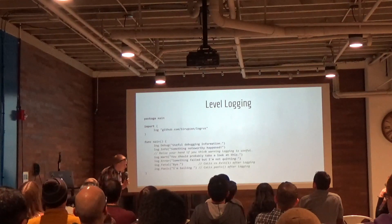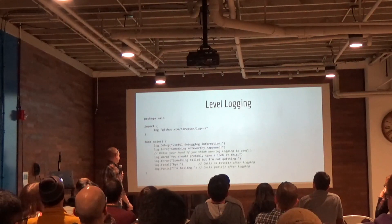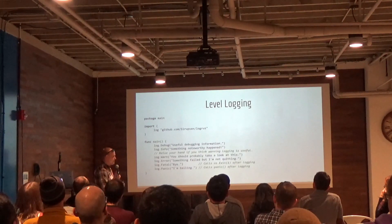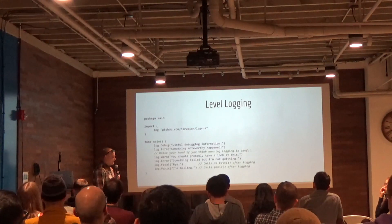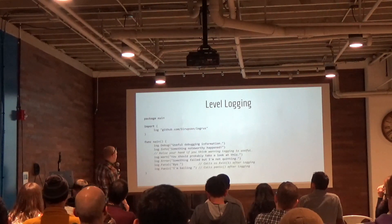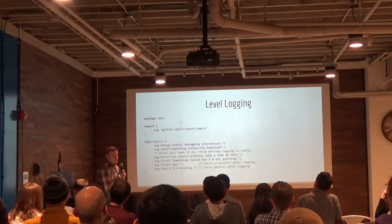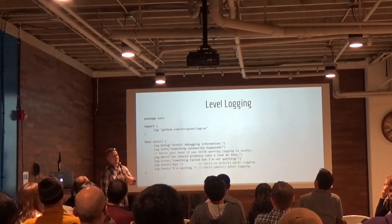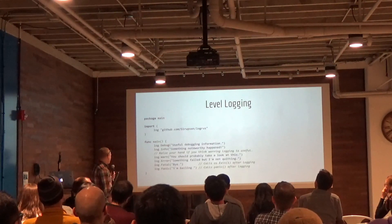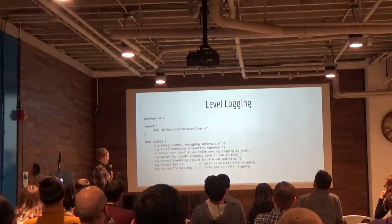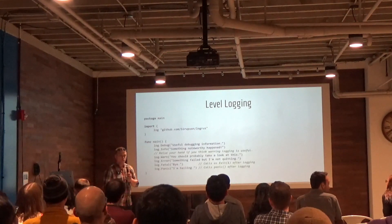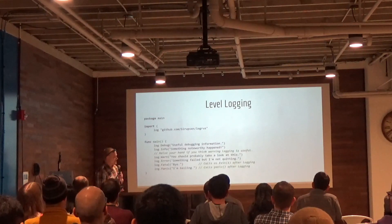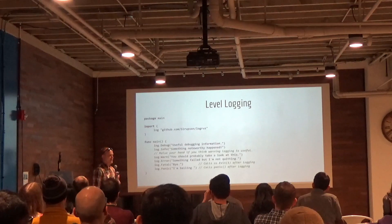One of the cool features is level logging, so for you Java people it'll be great. There was some discussion about adding trace level logging as a proposal, but the general idea is if you're trace logging then there's a problem and you should probably live with that. It does actually have more level logging. If you call the fatal interface, it just calls os.Exit(1), which is great when you don't actually want to panic. But if you need to panic, you can just call log.panic and it will panic. So it's up to you to handle that.